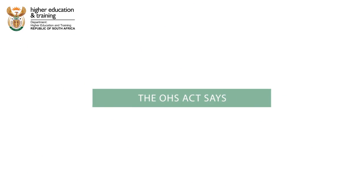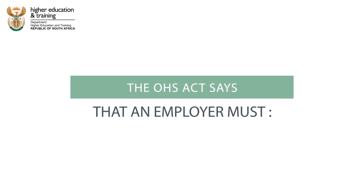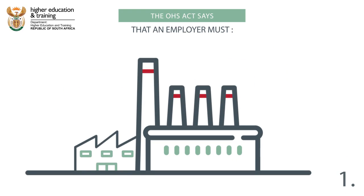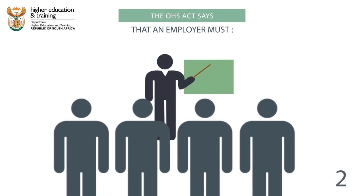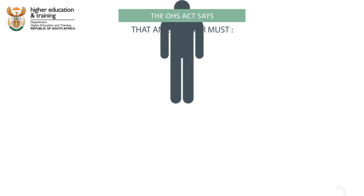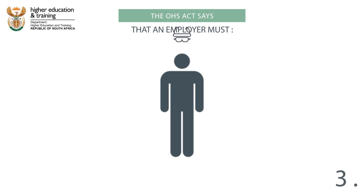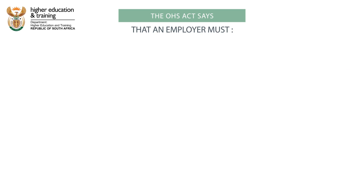The OHS Act says that an employer must: 1. Ensure a healthy and safe workplace for all employees. 2. Ensure that employees are trained to deal with the health and safety risks associated with their work. 3. Provide employees with the correct personal protective equipment, or PPE for short, that they need to do their job safely.